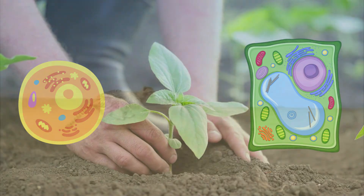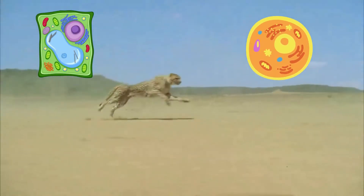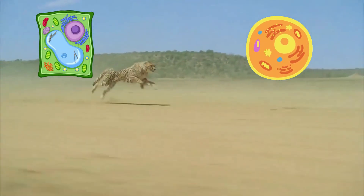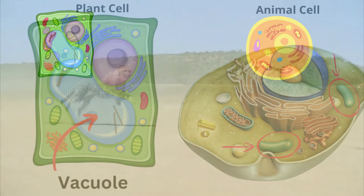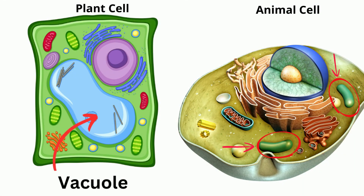Although both plant and animal cells have vacuoles, they vary greatly in their shape. On the left, you'll notice that the vacuole for the plant is very large, and there's one central vacuole. In fact, the central vacuole may take up between 30 and 70 percent of the plant cell's volume.